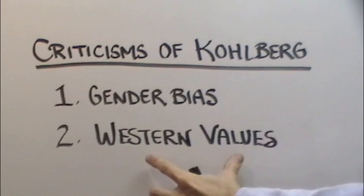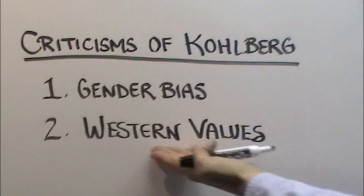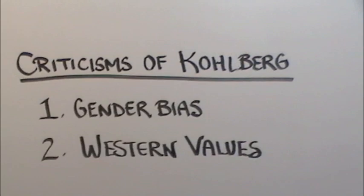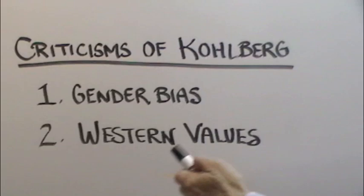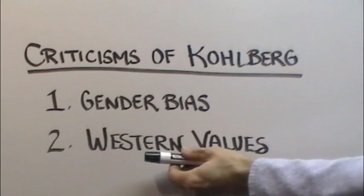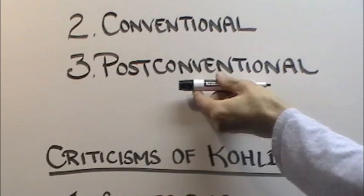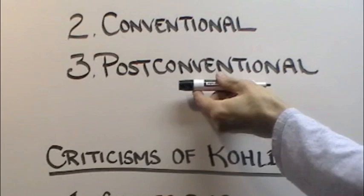The second criticism of Kohlberg is that he was primarily using Europeans and Americans, so he was not addressing the concerns of Asian societies — how the Indian, Chinese, or Japanese populations would answer that same question. In the eastern part of the world, the values of a group are very often put over the values of an individual. So post-conventional morality might look very different — a person might go along with society not because they're simply conforming, but because they genuinely believe that is the correct way to answer such a moral question.